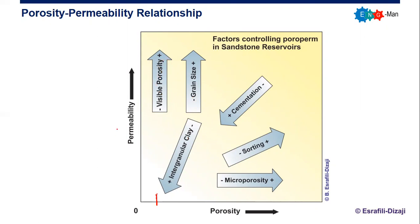At constant total porosity, if we have higher visible porosity we will have higher permeability. You can have the same constant total porosity but different visible porosity or effective porosity. If you have higher effective porosity — or in this picture, visible porosity — you will have higher permeability, and vice versa. That's the first point.